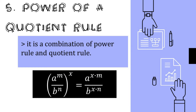In our previous video we used multiplication, but here we use division. Take note: the operation present in a given group must be division. If it is addition or subtraction, we cannot apply the power of a quotient. What we do here is just distribute the exponent to each variable inside the group.